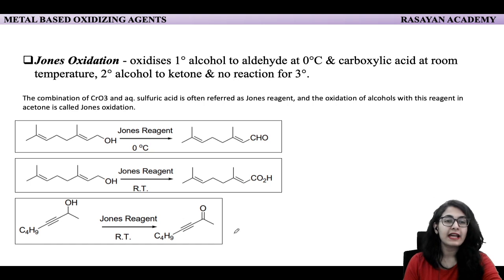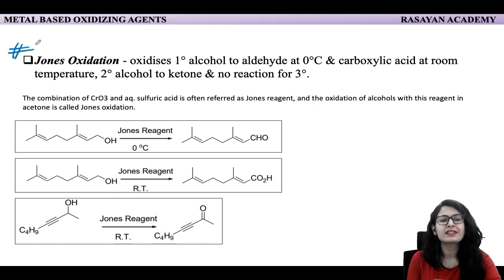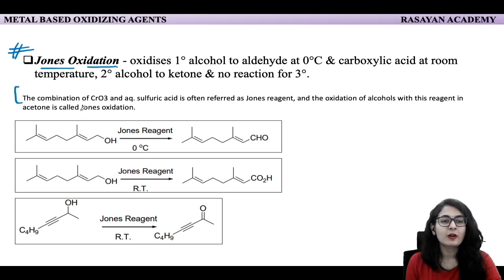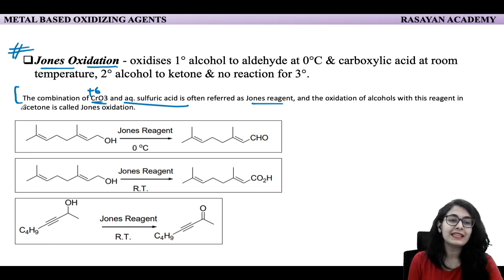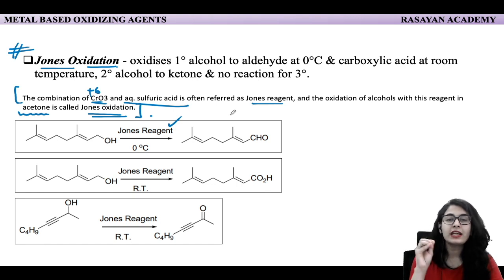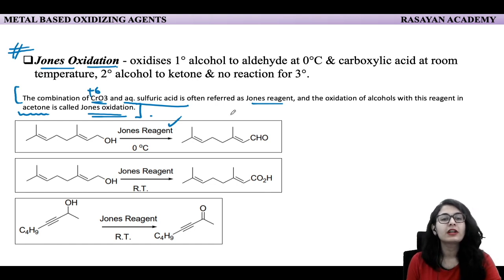The first reagent we talk about is Jones oxidation — it is very popular because it is a very strong oxidizing agent. The reagent is a combination of CrO₃, where chromium is in the +6 oxidation state, and aqueous sulfuric acid. It is often known as Jones reagent. The oxidation of alcohol with this reagent in acetone as a solvent is Jones oxidation. So whenever we talk about Jones reagent, it is basically CrO₃ and H₂SO₄ in acetone.